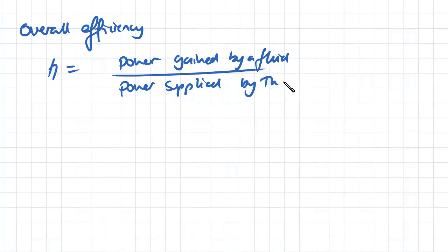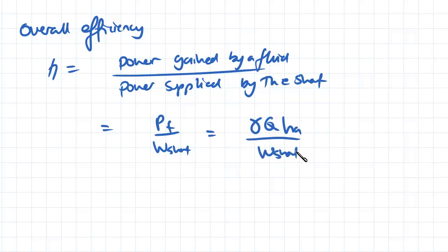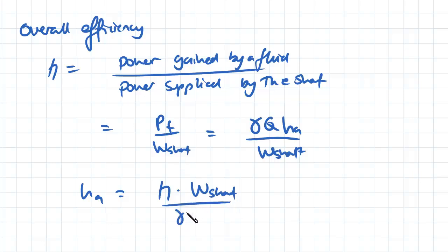That equals the power gained by the fluid divided by the power given to the shaft. The power gained by the fluid equals the unit weight multiplied by the flow rate multiplied by the actual head rise Ha. We can rearrange this so that Ha equals efficiency multiplied by the power given to the shaft, divided by the unit weight and divided by the flow rate.